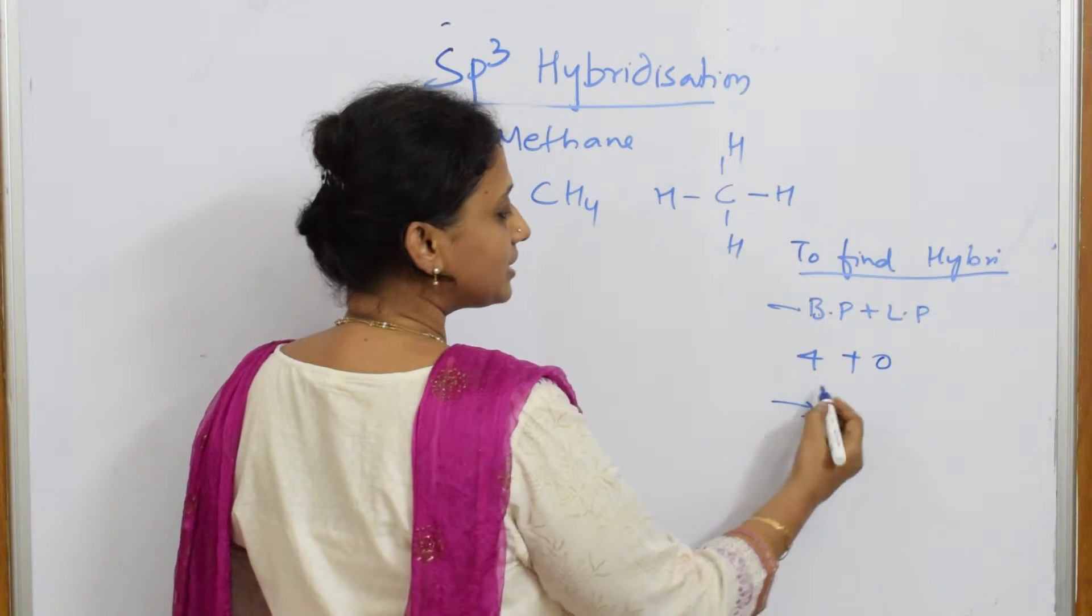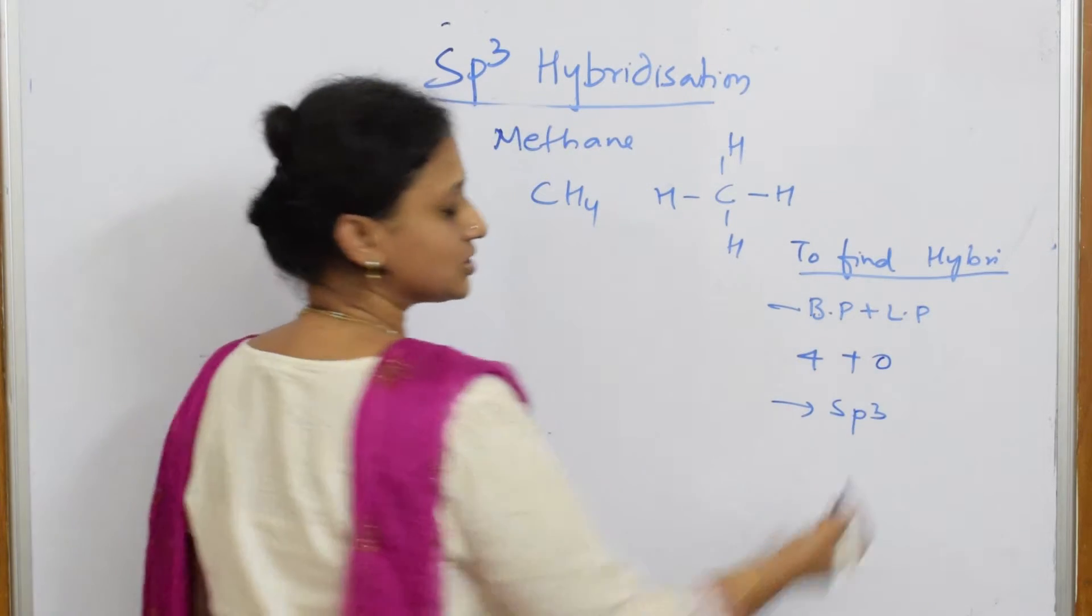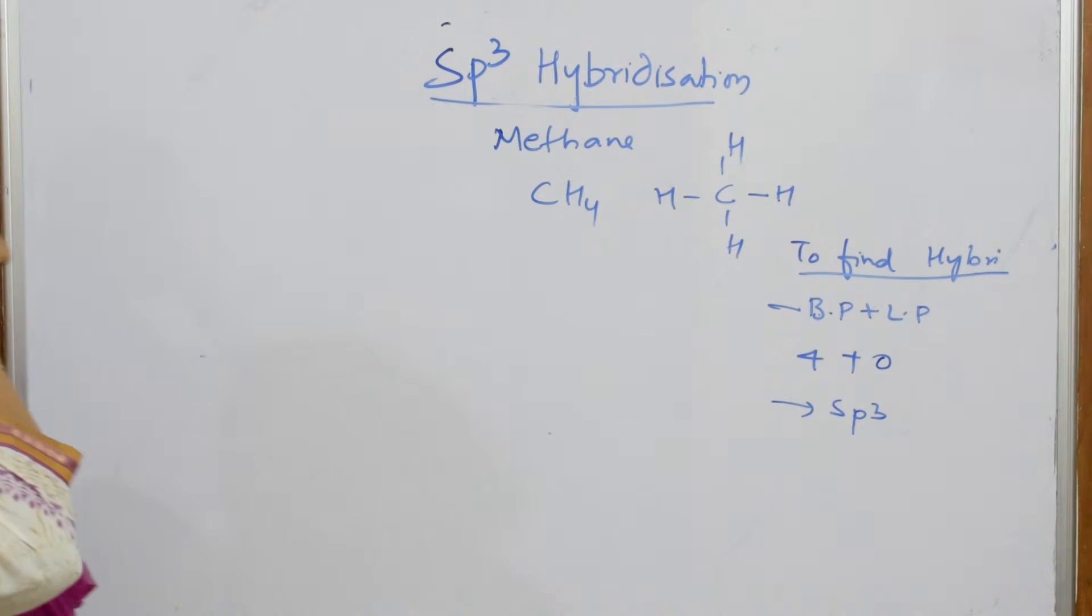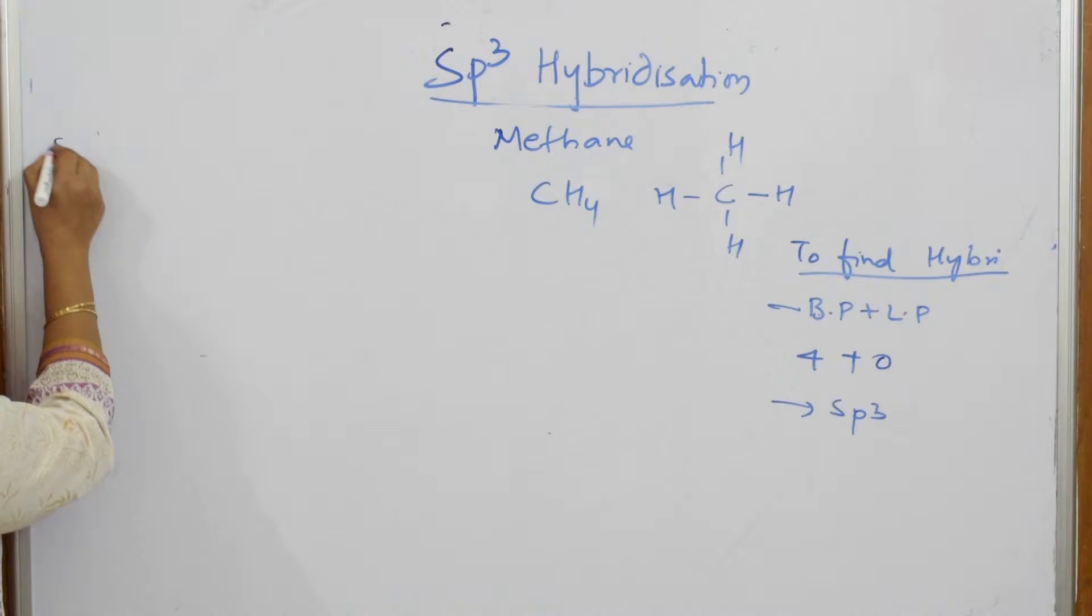So what is the type of hybridization? SP3 hybridization. This is how we are going to do. SP3 hybridization. So let us start with the structure. So as soon as I have to draw step 1.